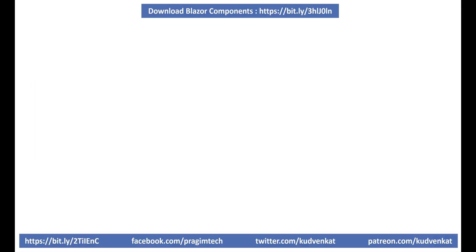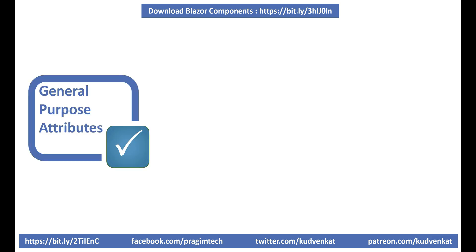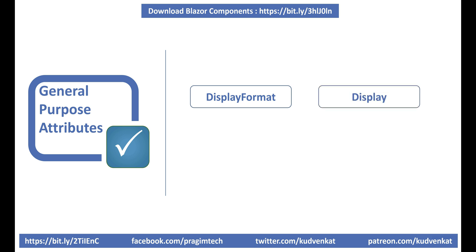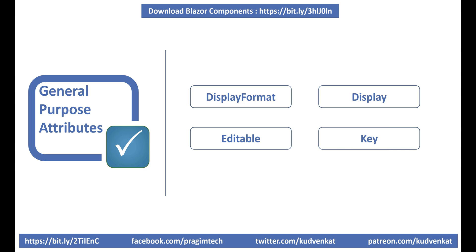In addition to validation attributes, .NET also provides these general-purpose attributes: DisplayFormat sets the display format for a data grid column; Display sets the display name for a data grid column; Editable indicates whether a field in the data grid is editable; and Key specifies the primary key column in a data grid.